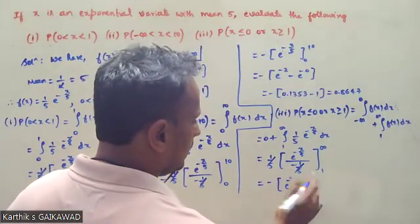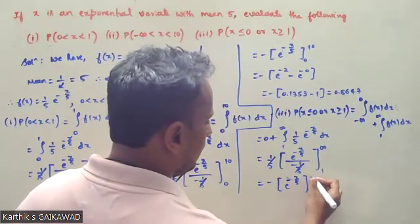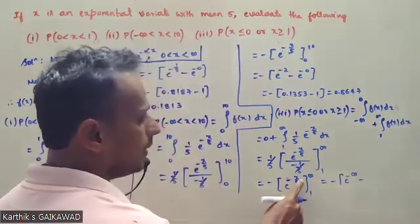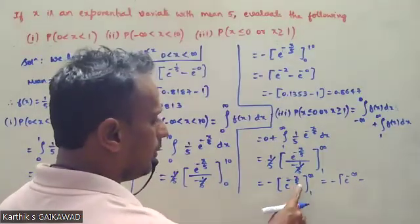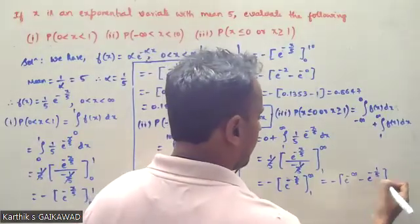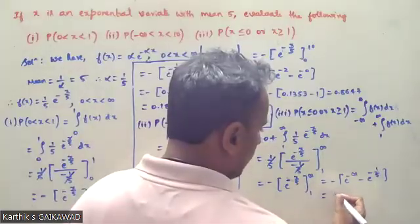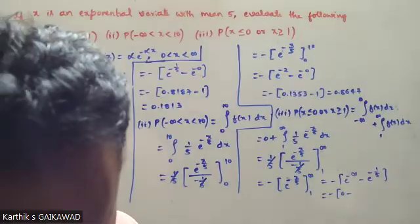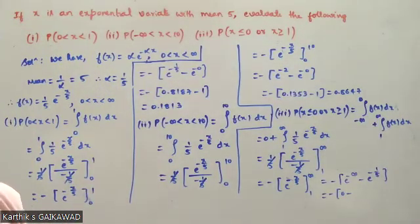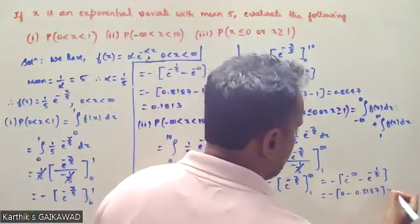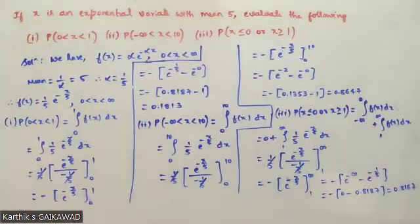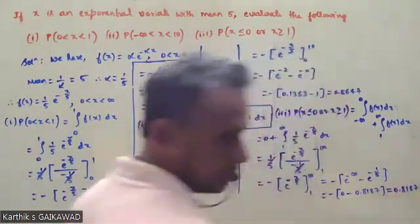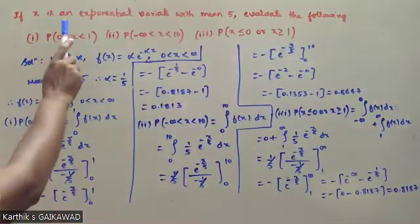We compute the integral from 1 to infinity of (1/5) e to the power minus x by 5 dx. Evaluating: minus e to the power minus x by 5 from 1 to infinity. Upper limit gives e to the power minus infinity equals 0; lower limit gives e to the power minus 1 by 5. The answer is e to the power minus 1 by 5, which equals approximately 0.8187.